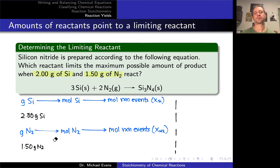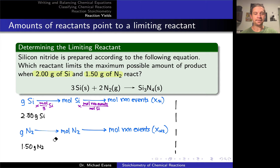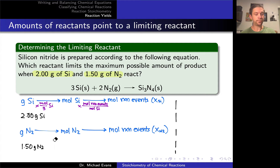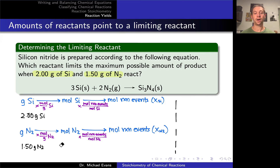Let's get into the nitty-gritty of actually calculating the numbers. To go from grams of silicon to moles of silicon, we multiply by the moles per gram of silicon, or divide by the molar mass in grams per mole. Then to convert moles of silicon into moles of reaction events, we multiply by the ratio of reaction events per mole of silicon from the balanced equation. We follow the exactly analogous process for N2.